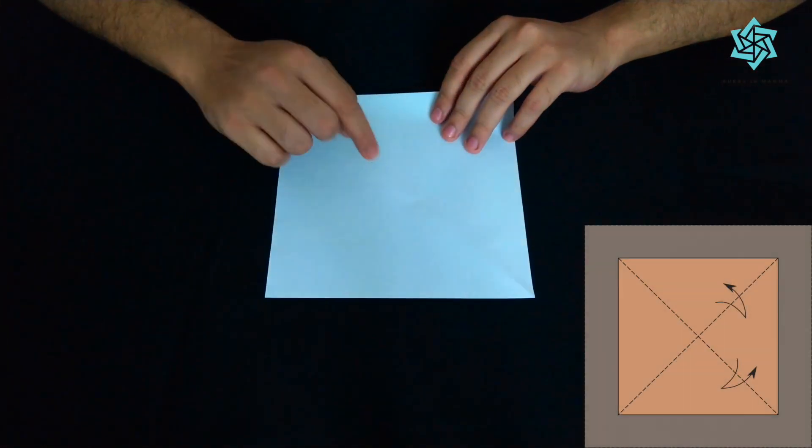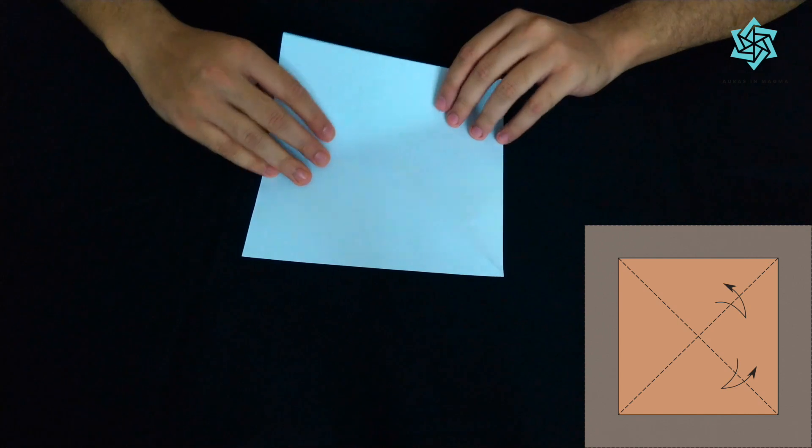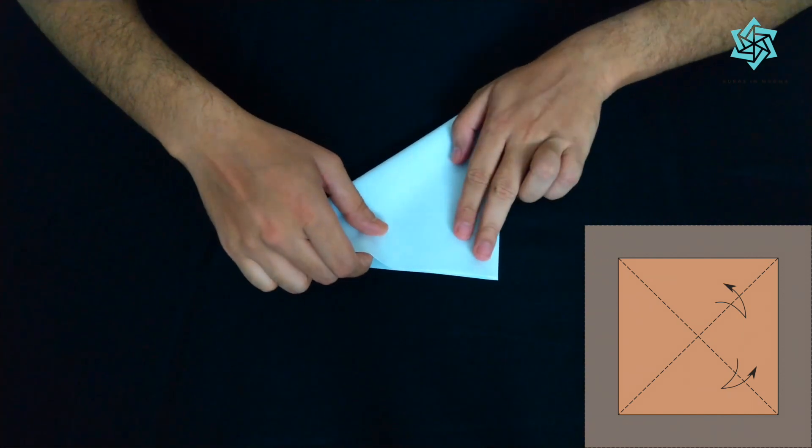So for a water bomb base we'll have to start with a square sheet of paper and what we do is we firstly take this corner and put it on the other corner, the one which is diagonally opposite to it.